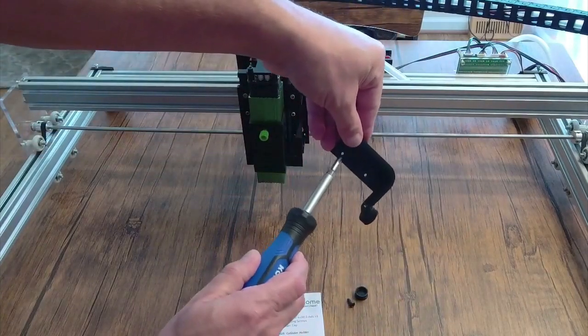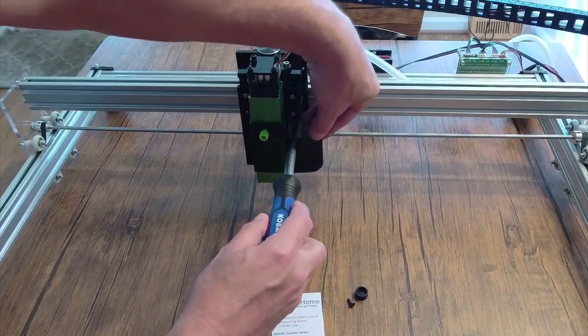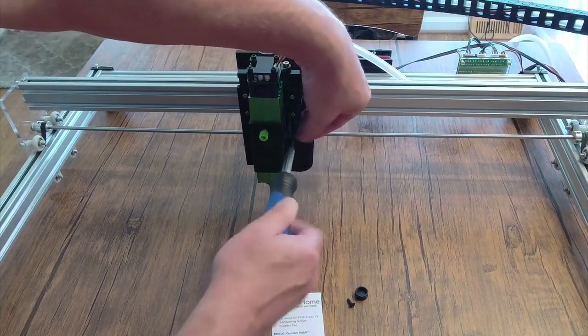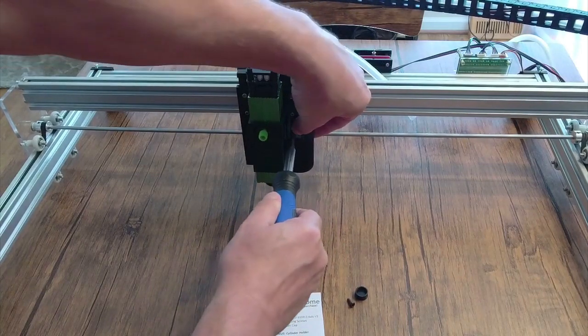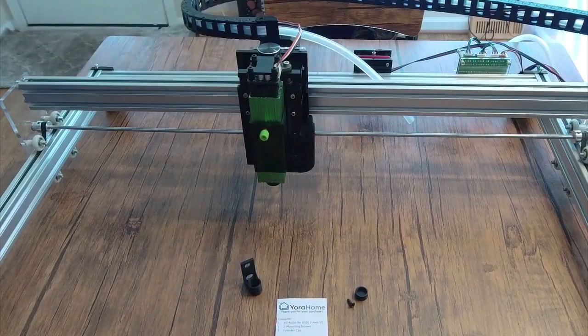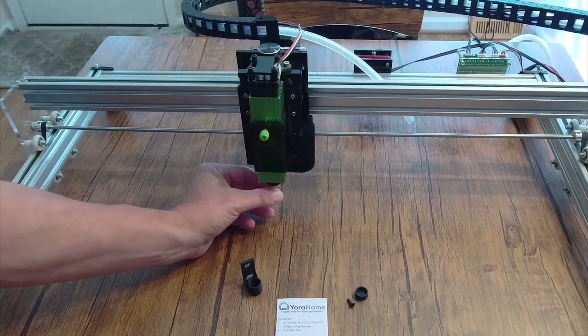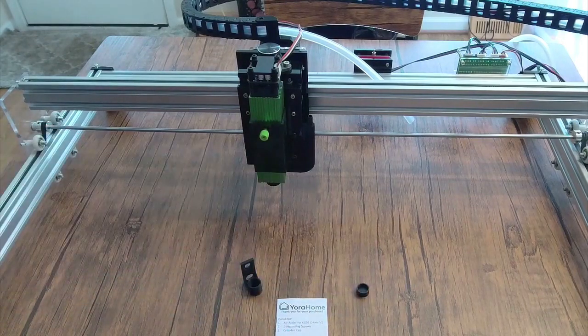Now you're going to take the head unit and line this screw up. You just feel it kind of catch in the hole there. I'm holding it against it, and right there. You can see it should sit right up underneath, and then the same thing with the second screw.